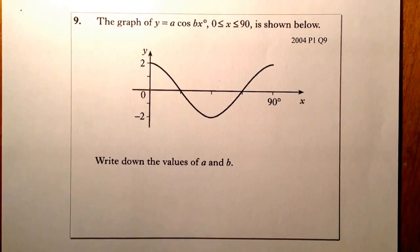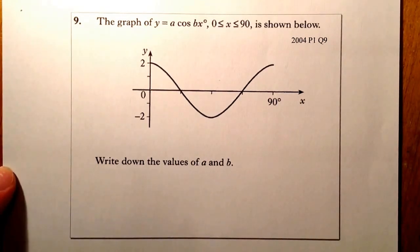Question 9, and what we're doing here is we're working from the standard grade credit paper. Right, so if I look at this, the graph of y equals a cosine bx between 0 and 90 is shown below, and to work out what the values of a and b are from the graph.